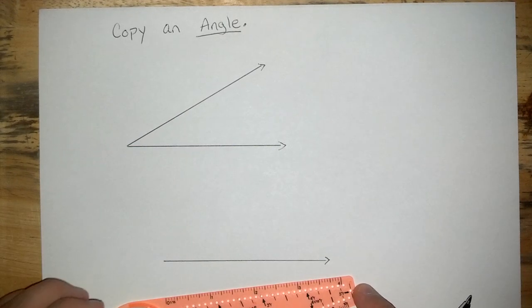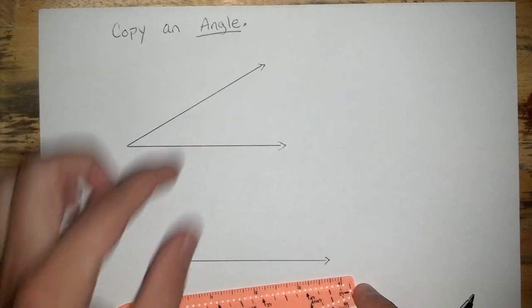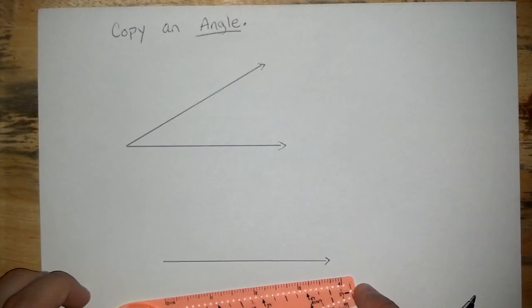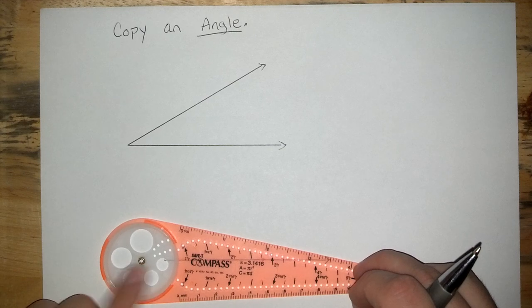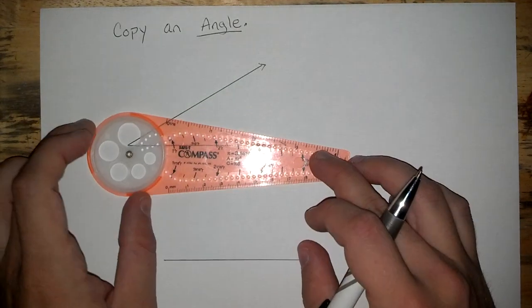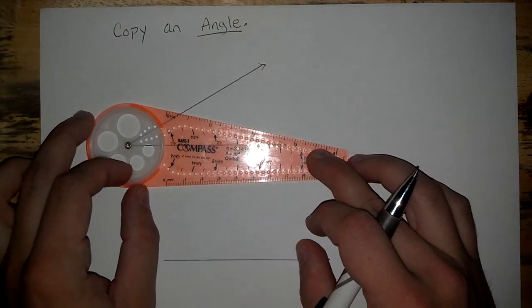Next, we have to figure out how big this gap is so that we can recreate it down here. The first move, go ahead and line up the brass ring on your safety compass with the vertex, or the corner here of your angle.